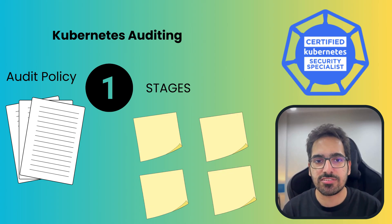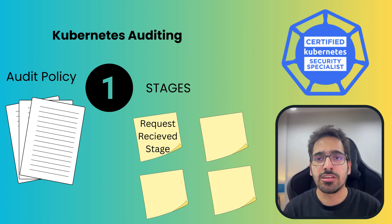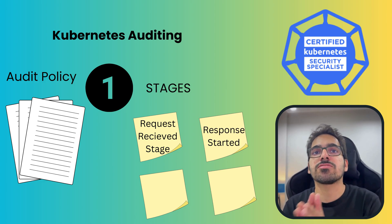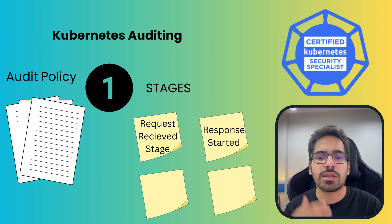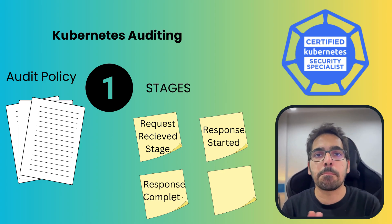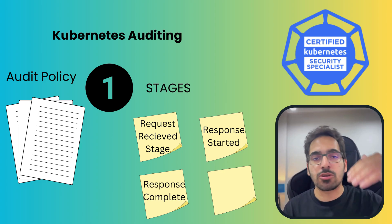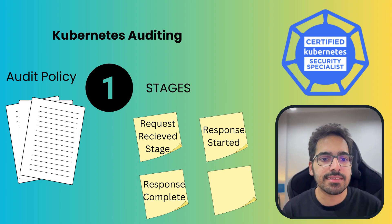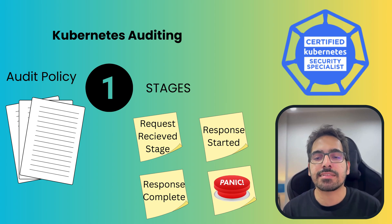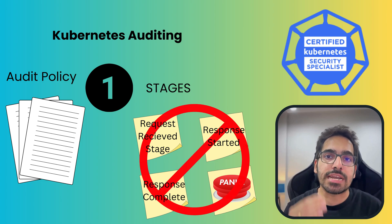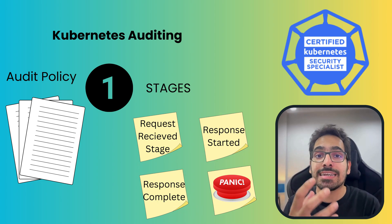There are four different stages. As soon as the request comes in, that is the RequestReceived stage. Then there is ResponseStarted, which is only for long-running requests such as watch. Then comes ResponseComplete, meaning when there are no more bytes to be sent and the response body is complete. The final stage is Panic, if any error is generated.